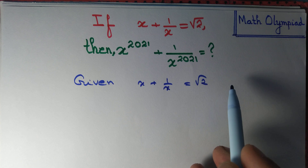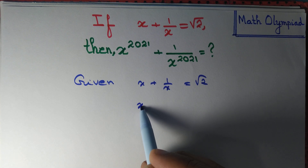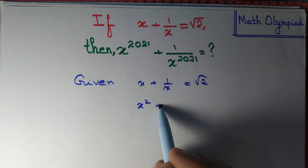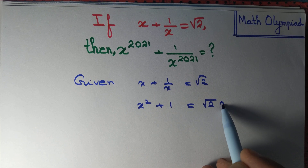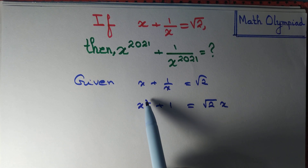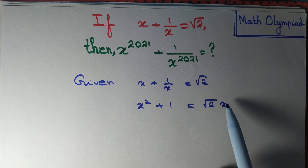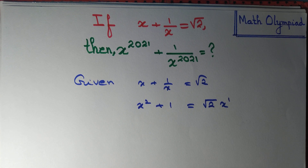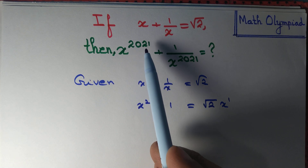Let's multiply by x throughout to obtain x squared plus 1 equal to root 2 times x. You see that the power is decreasing by 1 — here power is 2 and here power is 1. But we want power of 2021, which is a big number.